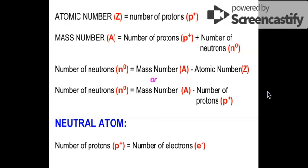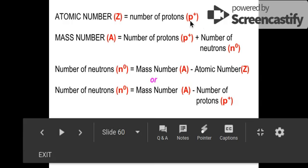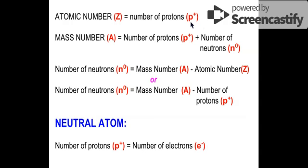Remember that the atomic number Z is always equal to the number of protons. Z is the symbol for atomic number and that's always equivalent to the number of protons. The number of protons gives you the identity of your atom, because the atomic number is the number you see on the periodic table — each element has its own number assigned to them — and this atomic number is found on the top of the symbol of the element.